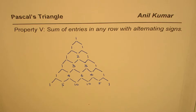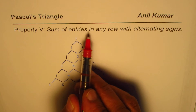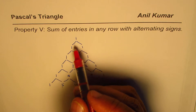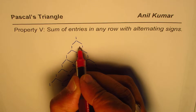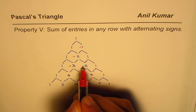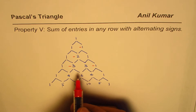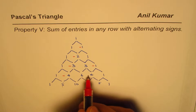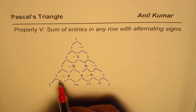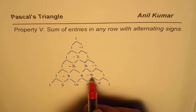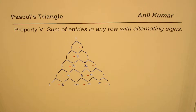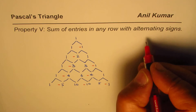When we say sum of entries with alternating signs, that means keep the first entry positive, then alternate: negative, positive, negative, positive, and so on. So alternate entries are made negative, and we need to find the sum of these.